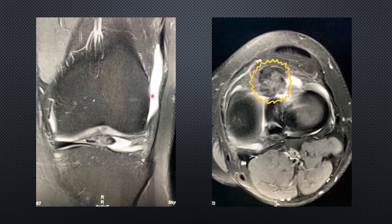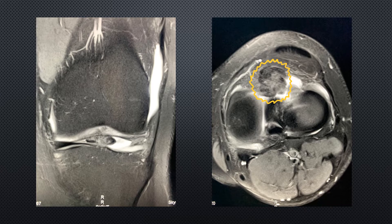On the coronal T2 fat-suppressed image, we can see this lesion right at the infrapatellar fat pad, and again appreciate the low T2 signal intensity. On axial proton density images with fat suppression, we again see the same mass at the infrapatellar fat pad. It is visible in all sequences and is easy to identify as a well-defined, encapsulated mass.